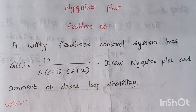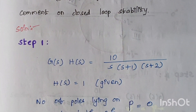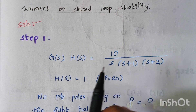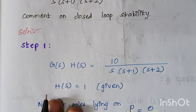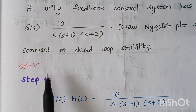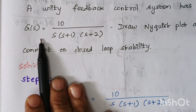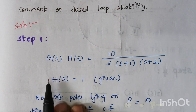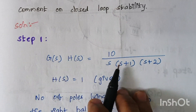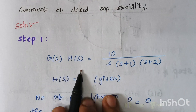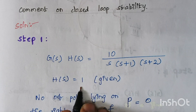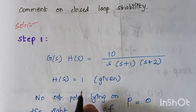The first step: here the transfer function is given. Since it is a unity feedback system, H(S) is not mentioned. We generally represent the transfer function with G(S) and H(S), and here the value of H(S) is 1 because it is a unity feedback system.